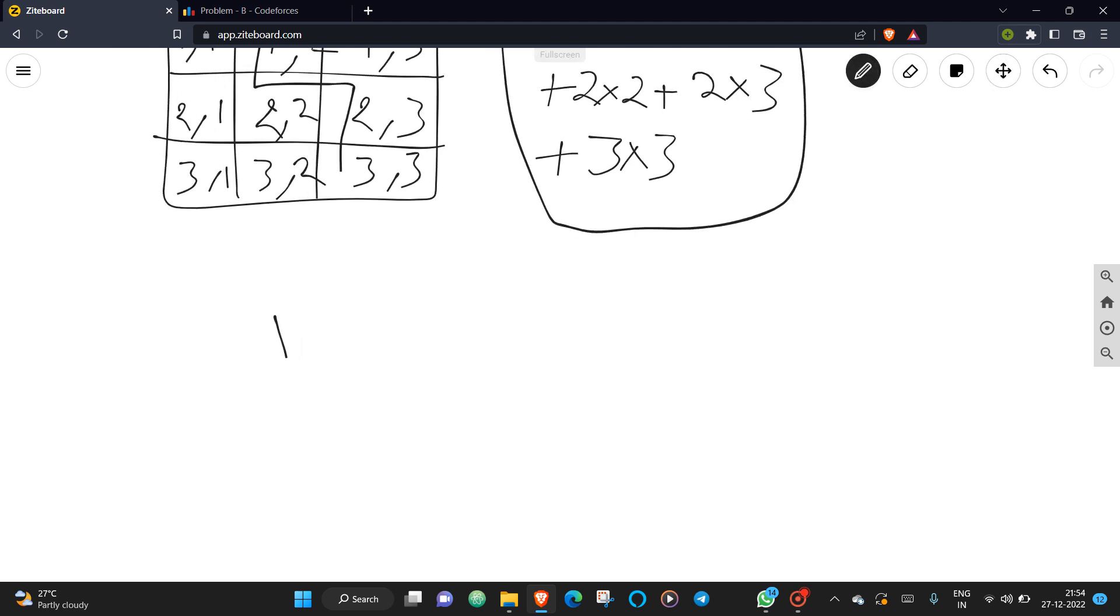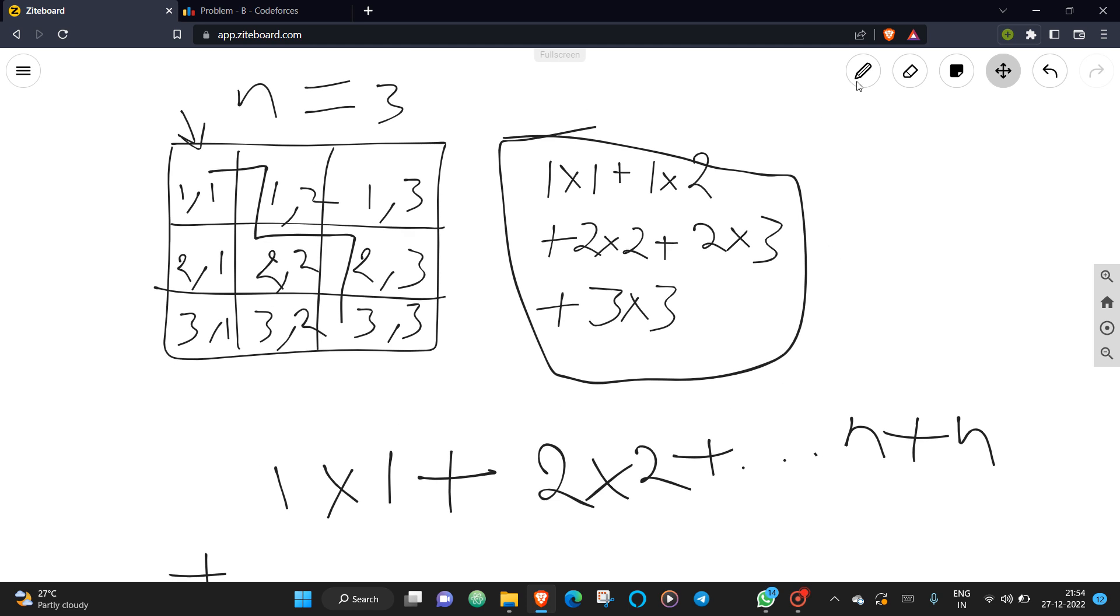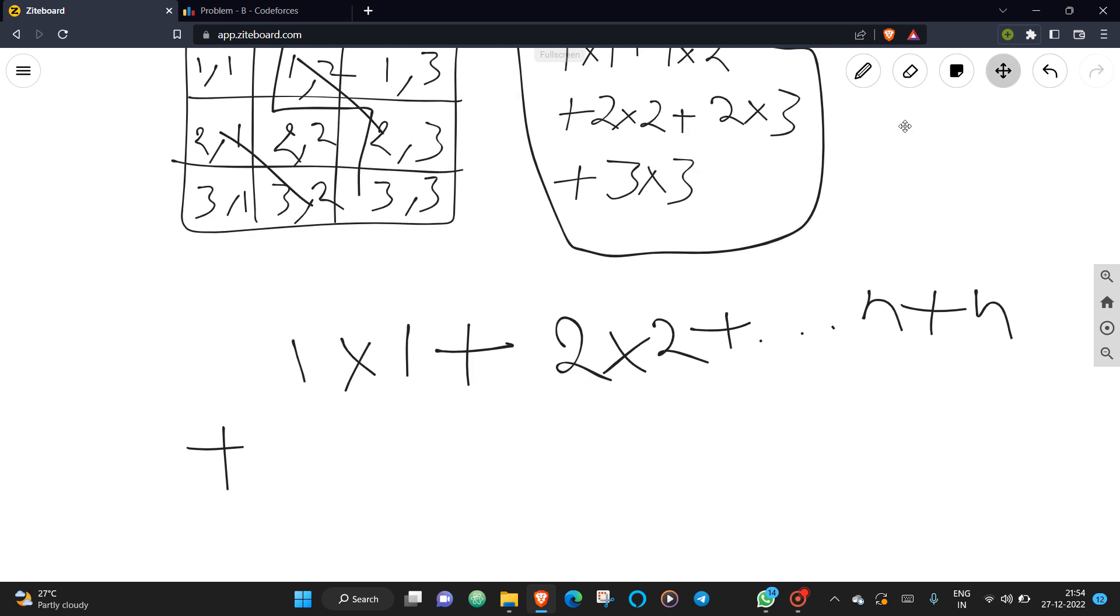It's the sum of the diagonal, so n times n plus the sum of either the upper diagonal or the down diagonal. You need to add one of those—either one will be okay. It will be either 1 times 2 or 2 times 1; both are equal since it's a product.